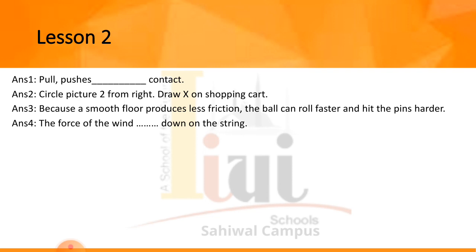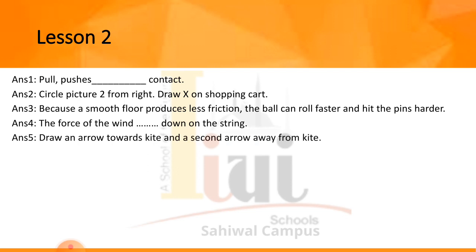Question number 5: draw arrows on the picture to show the forces acting on the kite. Draw one arrow toward the kite showing the wind pushing it up, and another arrow away from the kite showing the force pulling it down, in the opposite direction.